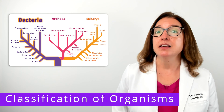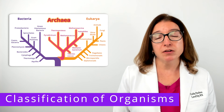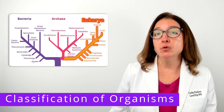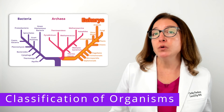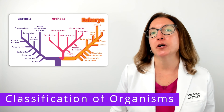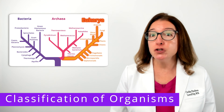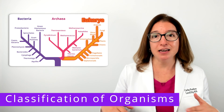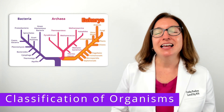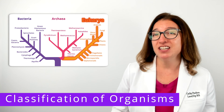Organisms in the archaea domain are also prokaryotes, but their cell walls do not contain peptidoglycan. Organisms that fall within the eukarya domain are all eukaryotes, which means their DNA is enclosed in a nuclear membrane. Not all eukarya have a cell wall, but for those that do, it does not contain peptidoglycan. Examples of eukaryotes include plants, animals, fungi, protozoa, algae, and parasites.